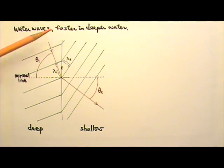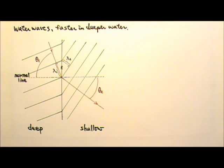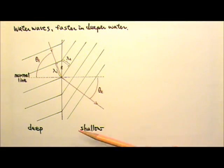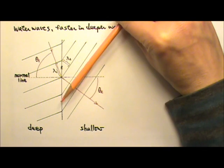Straight periodic waves are produced here, and these are the wave fronts. As the waves propagate and enter the shallow region, the waves slow down and bend this way.